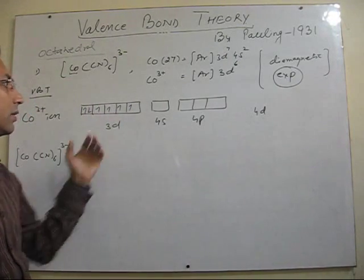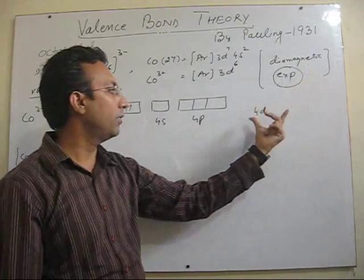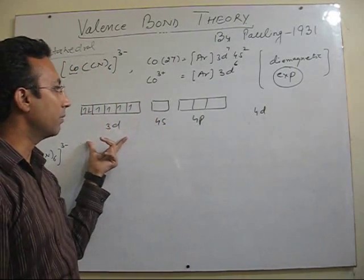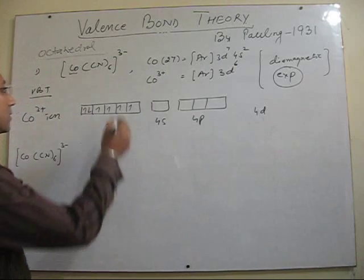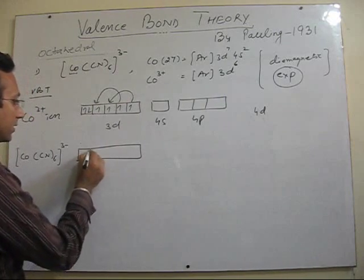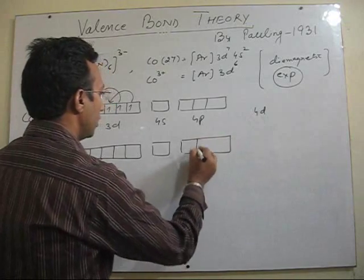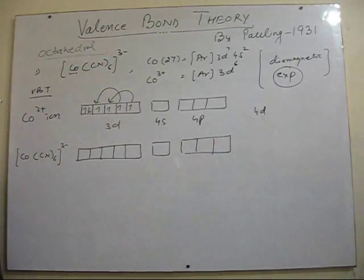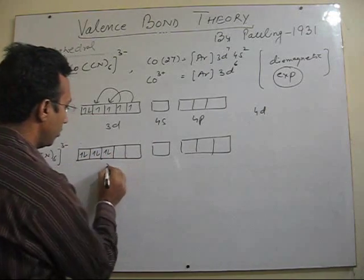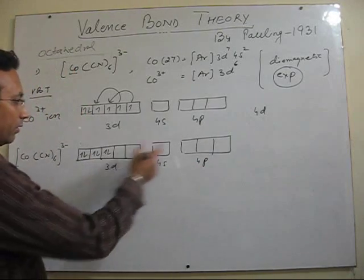But that's not the case that we should use 4d. We have to observe the magnetic behavior. It is diamagnetic. If we use 4d then there will be 1, 2, 3 and 4 unpaired electrons and it will be paramagnetic. So in this case these electrons have to pair up. Only then you can explain its diamagnetic behavior. And moreover by doing this you can also create 2 vacant d orbitals. So like this. This is the situation now.